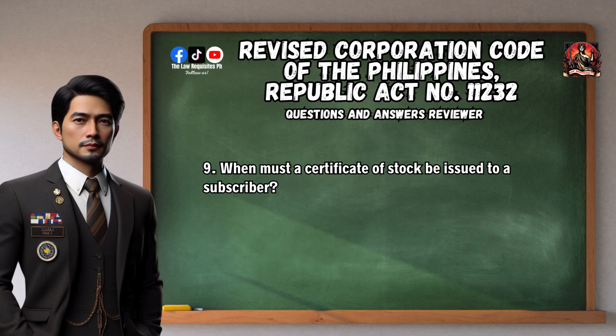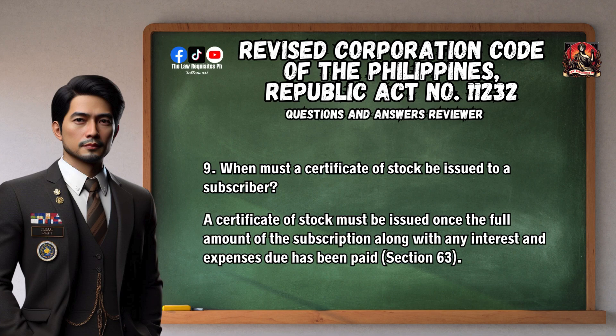Question 9: When must a certificate of stock be issued to a subscriber? A certificate of stock must be issued once the full amount of the subscription, along with any interest and expenses due, has been paid. Section 63.